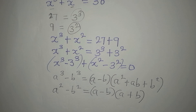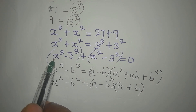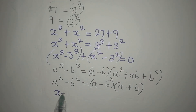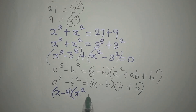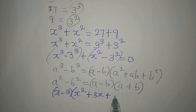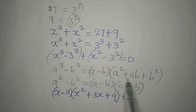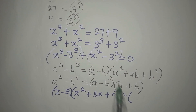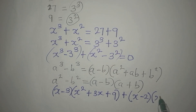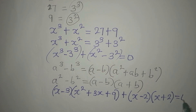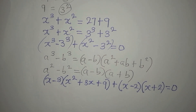Now what do we do? In place of a minus b we're going to have x minus 3. So we have x minus 3, then a squared is x squared, a times b is 3 times x which is plus 3x, then plus b squared which is 3 squared and that is 9. Then for the difference of two squares part, a minus b is x minus 3, into a plus b which is x plus 3.